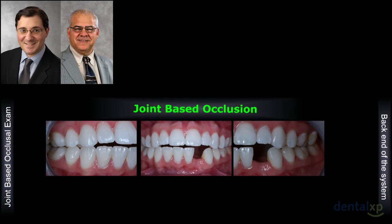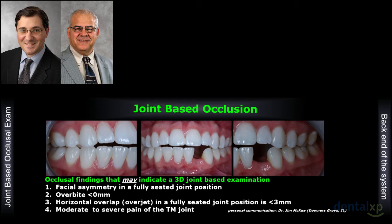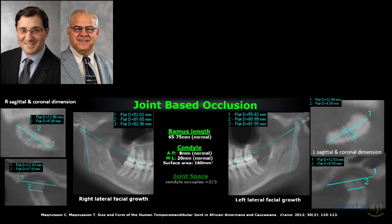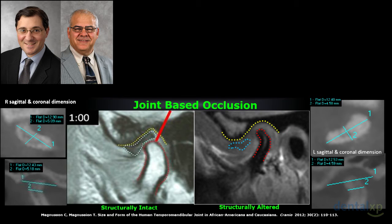The ability of imaging today has expanded our concepts. We've been conditioned to look at the front of the system for years, but imaging expands opportunities to look at the back of the system. When I see a patient with facial asymmetry in a fully seated condylar position — a reverse overbite, horizontal overlap less than three millimeters, or moderate to severe joint pain — imaging is warranted. We're able to understand the condylar surface area, load-bearing surface area, ramus length, and joint space. We should also consider MRI imaging: on the left you have a structurally intact disk complex; on the right, a structurally altered disk complex.